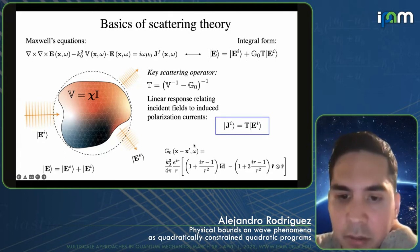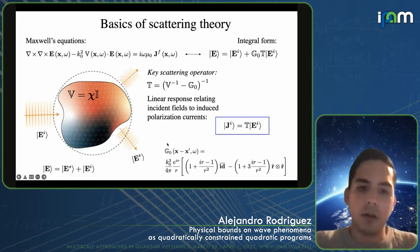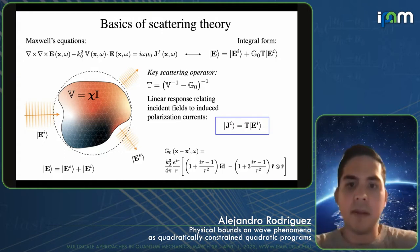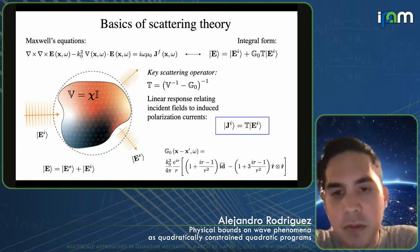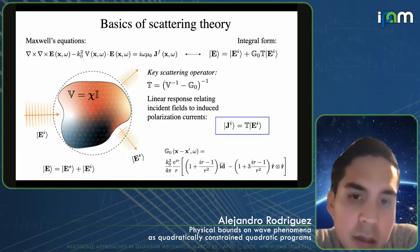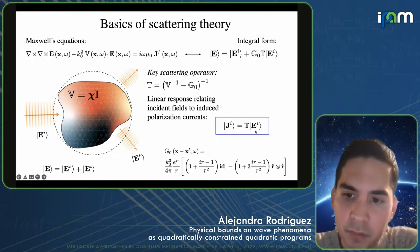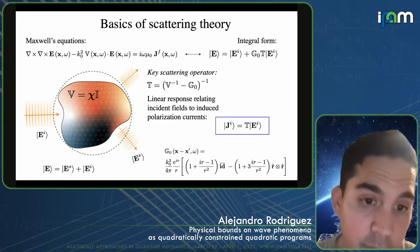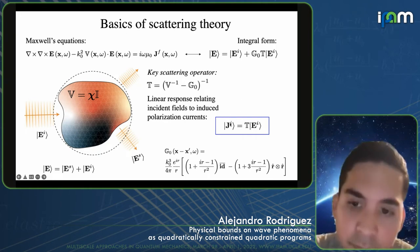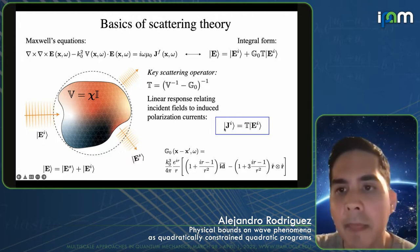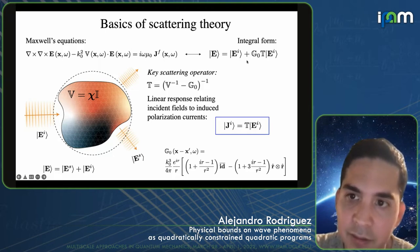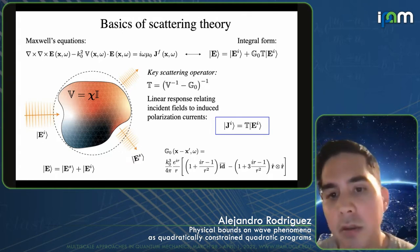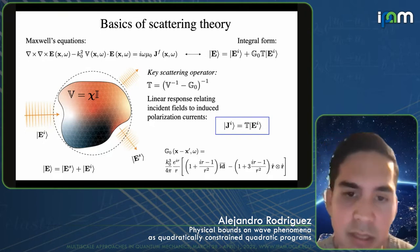G₀ here denotes the vacuum Green's function — the propagator in free space, basically the field radiated by a dipole source. The T operator is a linear response scattering operator relating incident fields: if I give you the incident field, the T operator outputs the induced polarization currents in the scatterer — the bound polarization currents. Given these bound polarization currents, the Green's function acting on them tells you what the scattered field is. Everything related to Maxwell's equations is encoded in this T operator.